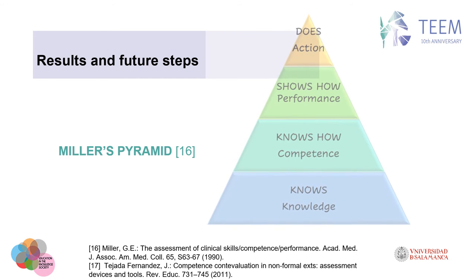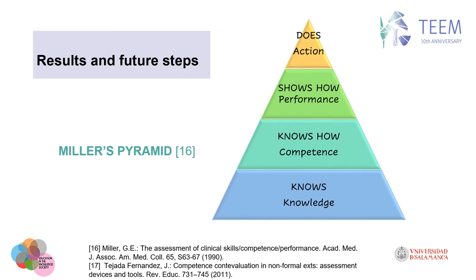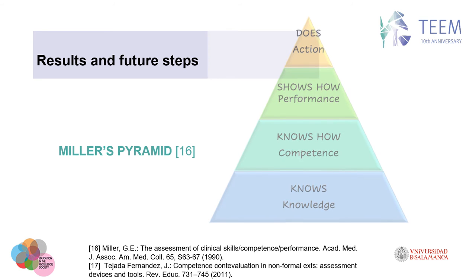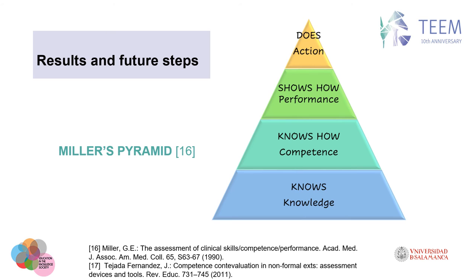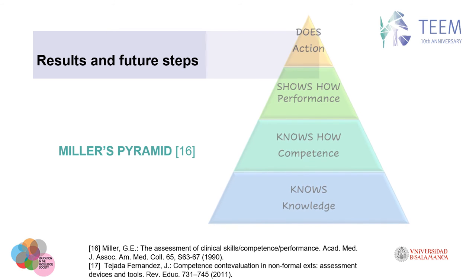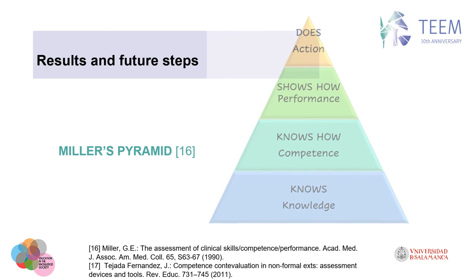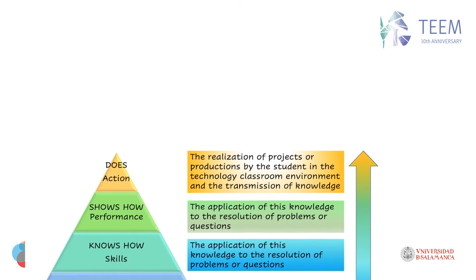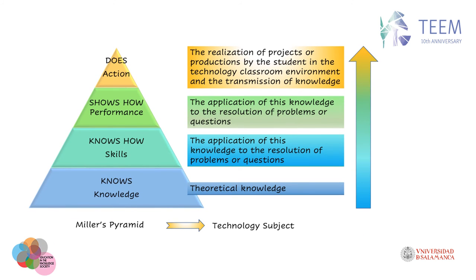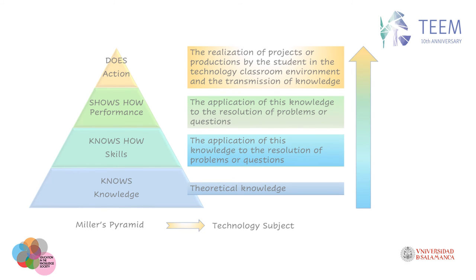At the base of Miller's Pyramid should be the knowledge, or the set of theoretical knowledge that every professional must master. The second level is knowing how — how he or she would use the theoretical knowledge acquired. At the third level we find 'demonstrates how' — a demonstration close to reality, such as simulation or role play. Finally, at the top of the pyramid, Miller places professional practices in a real environment. Transferring these ideas to the subject of technology in secondary education, we can propose different techniques for certified assessment: theoretical knowledge, application of that knowledge to problem resolution, realization of a project or production by the student in the technology classroom, and the transmission of knowledge.